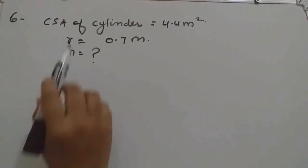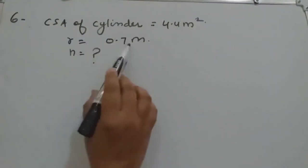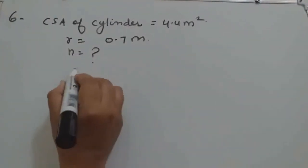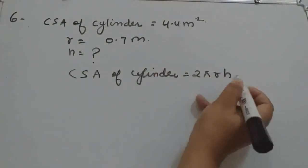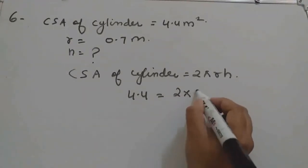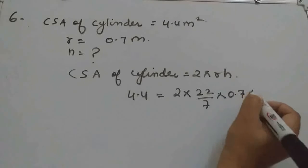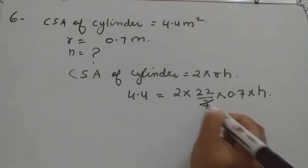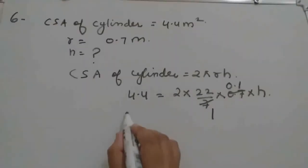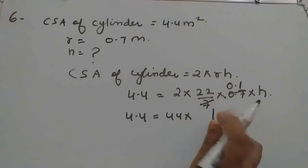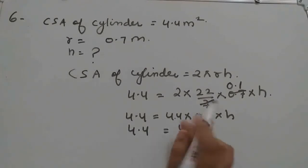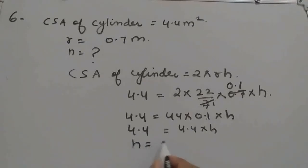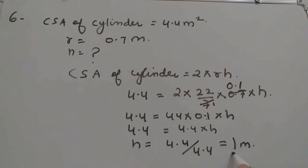Question number 6. Curved surface area of a cylinder is given. Radius of the base is given. Height we should find. We start with the formula CSA = 2πRH. CSA is 4.4, so 4.4 = 2 into 22/7 into 0.7 into H. Cancel 7 ones of 7. Then 44 into 0.1 into H gives 4.4H. So H equals 4.4 divided by 4.4, which is 1 meter.